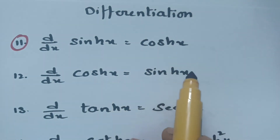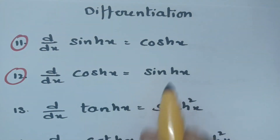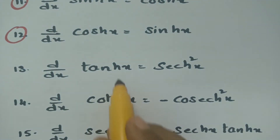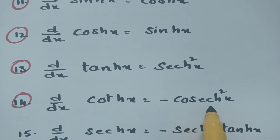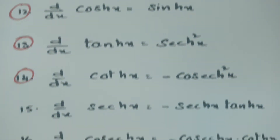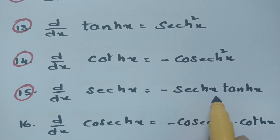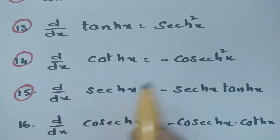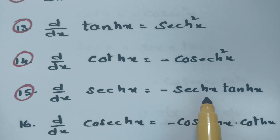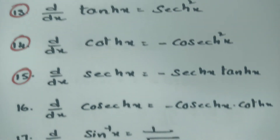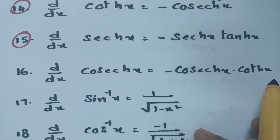For hyperbolic functions, there is no negative sign: the derivative of sinh x is cosh x, and the derivative of cosh x is sinh x. The derivative of tanh x is sech²x, and the derivative of coth x is minus cosech²x. The derivative of sech x is minus sech x·tanh x, and the derivative of cosech x is minus cosech x·coth x.